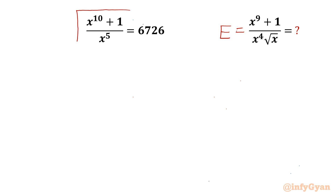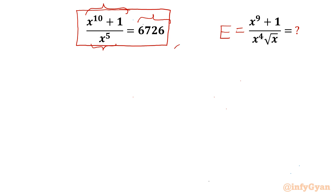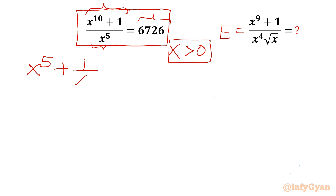The given equation is x^10 plus 1 over x^5 equal to 6726. The numerator is positive and the right hand side is a positive constant, so the denominator must be positive for real solutions. Therefore x should be greater than 0. Dividing through, we can write x^5 plus 1 over x^5 equal to 6726. Let us call this equation number 1.